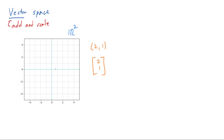So (2, 1), as you probably know from high school, can also be thought of as this arrow to the point (2, 1). This orange arrow really corresponds to (2, 1). And if we consider another vector in R2, for example (2, 2), that's going to be a vector that goes 2 to the right and 2 up. So this green vector is going to be (2, 2).